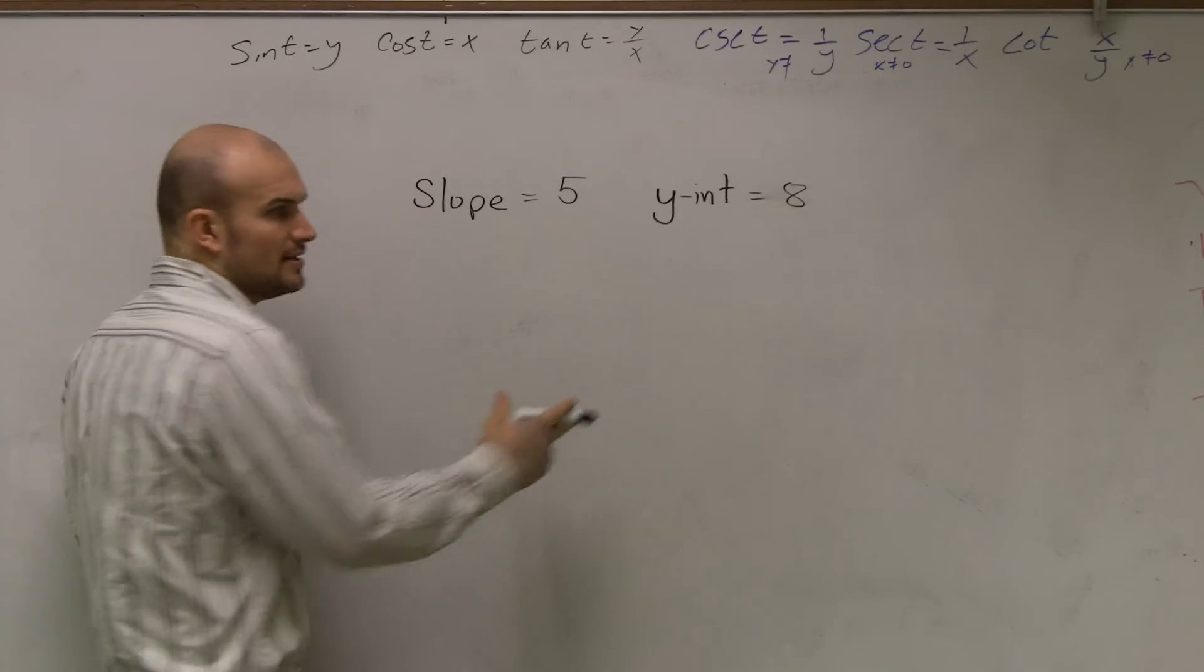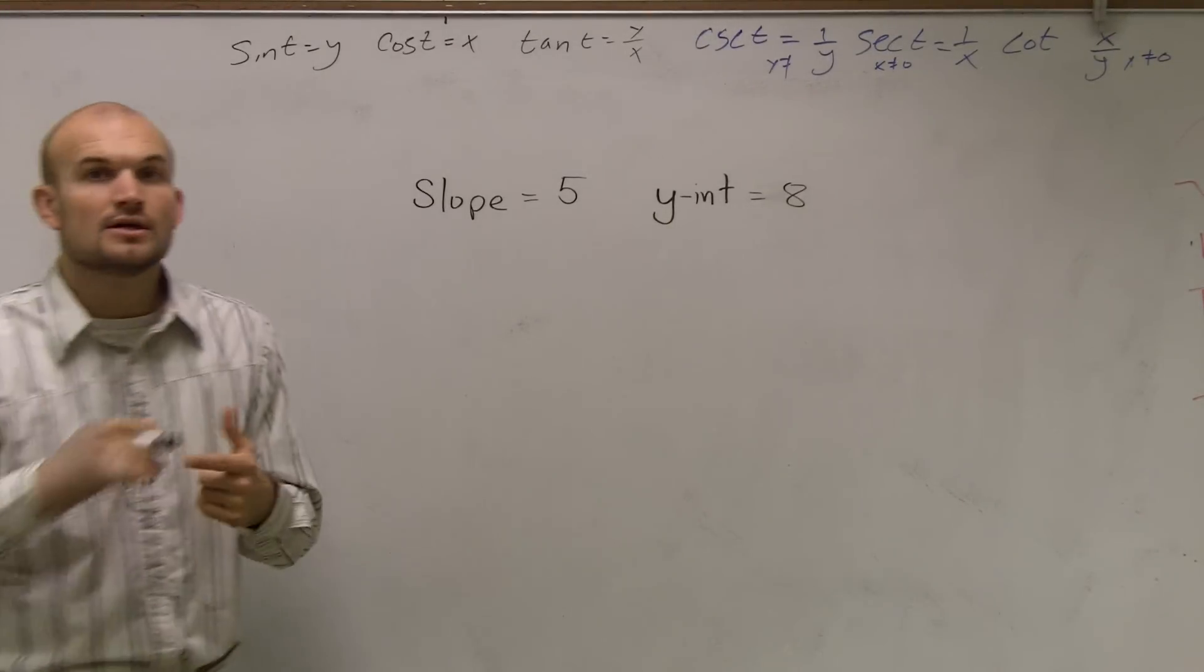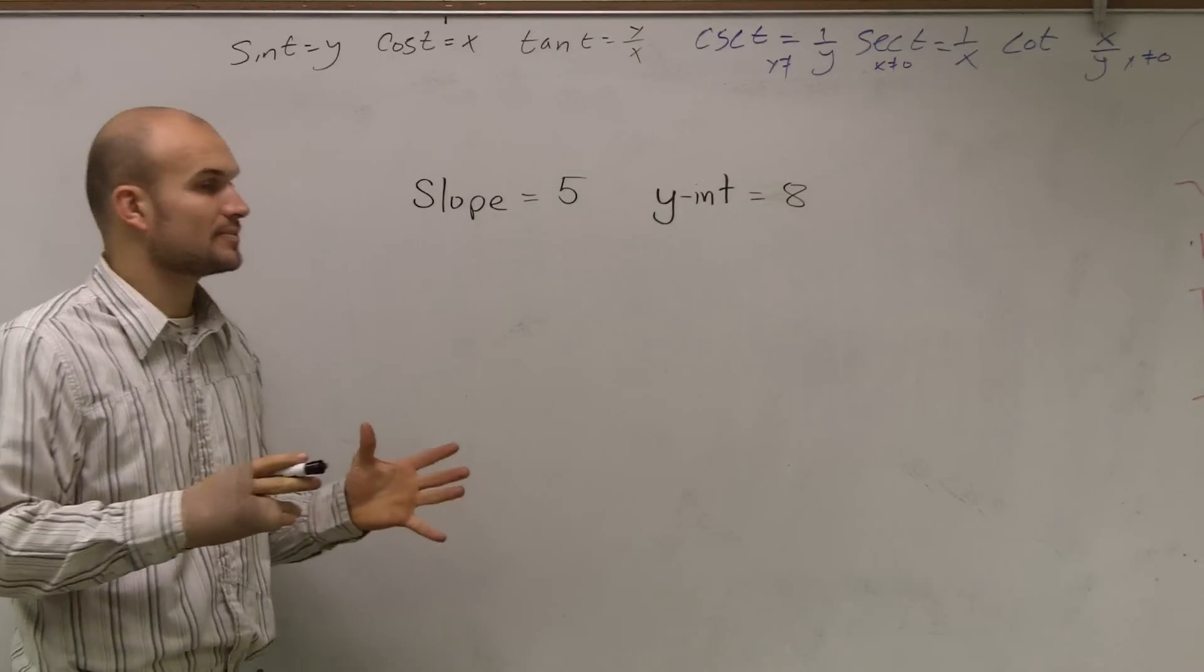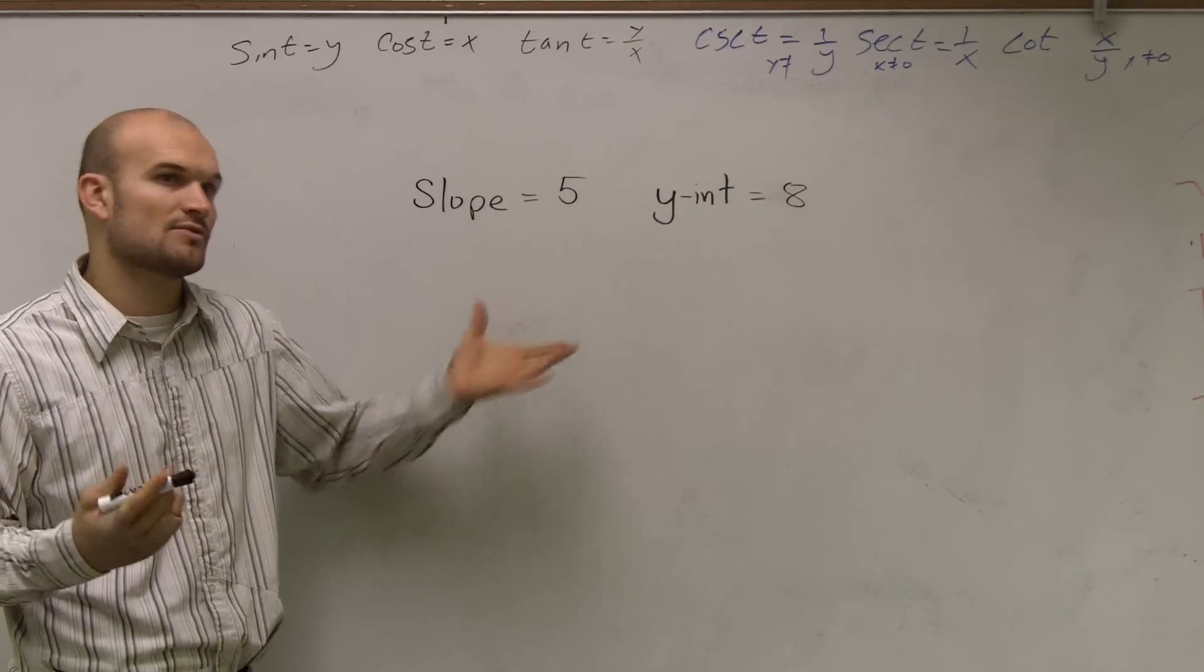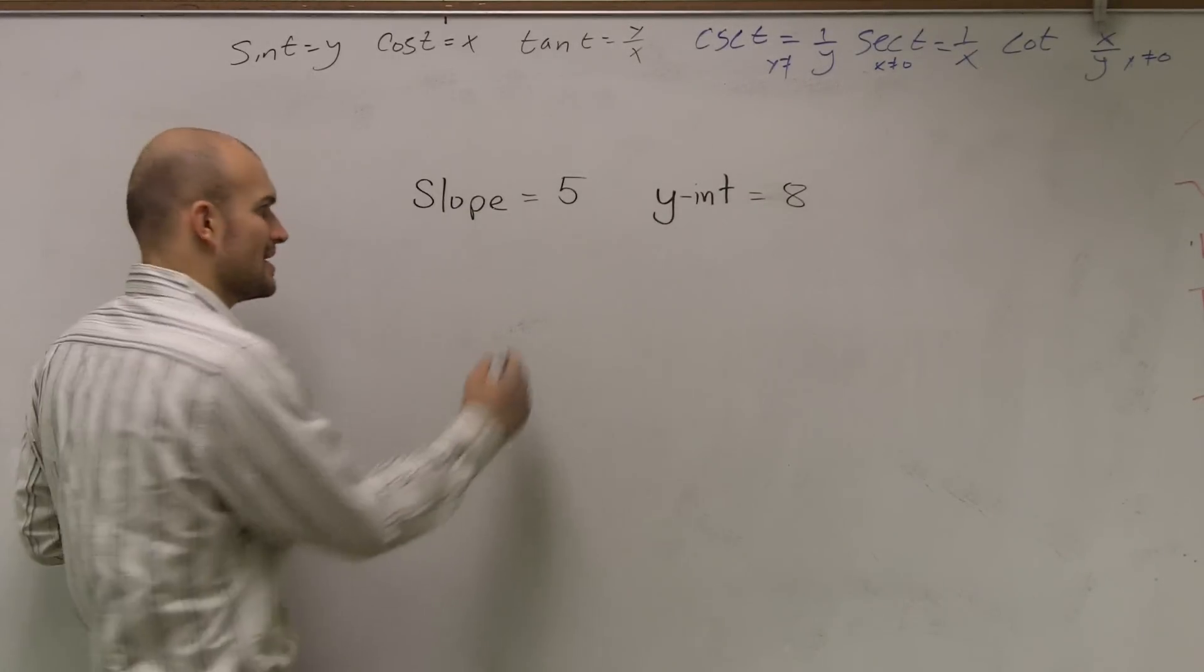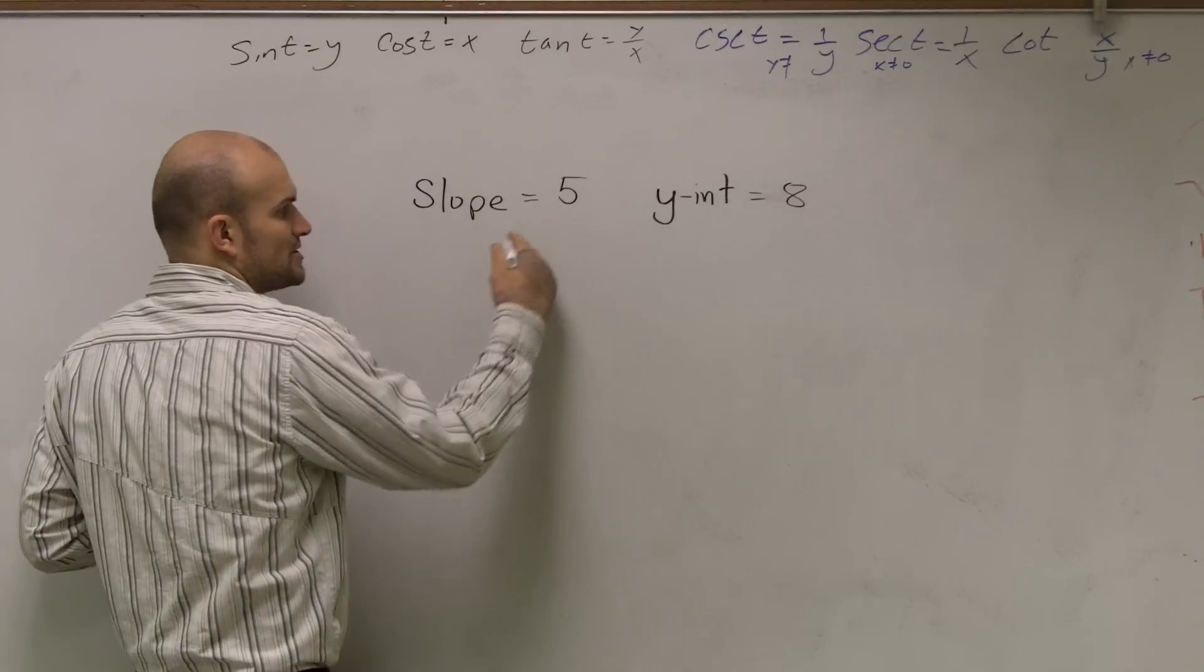We are given our y-intercept and our slope. The next thing we need to do is put it in our y equals mx plus b form, because that's what they ask. Remember, slope is your m.